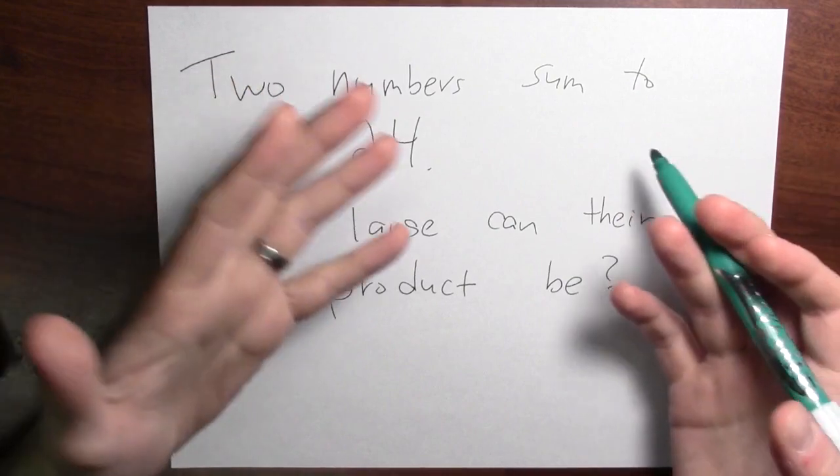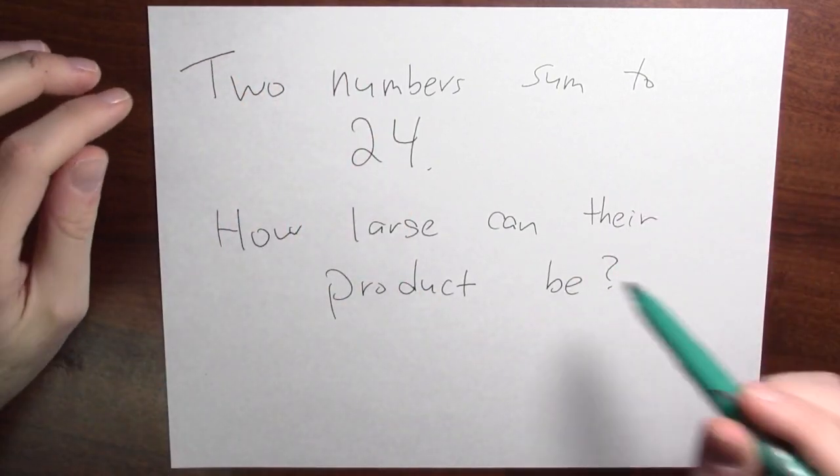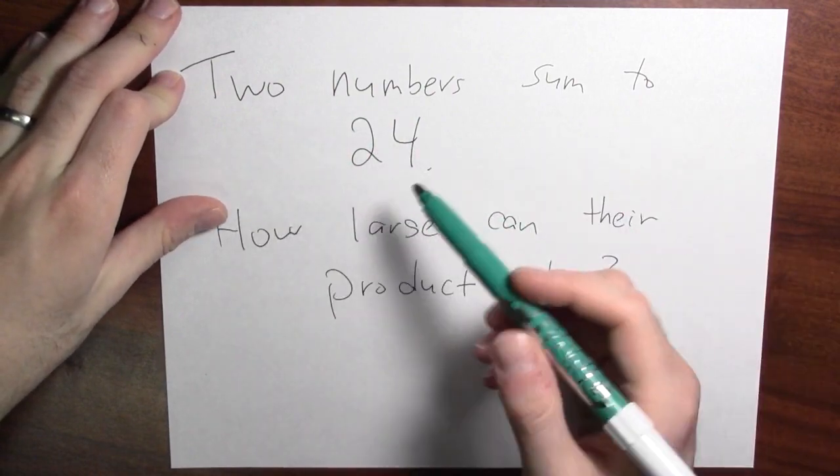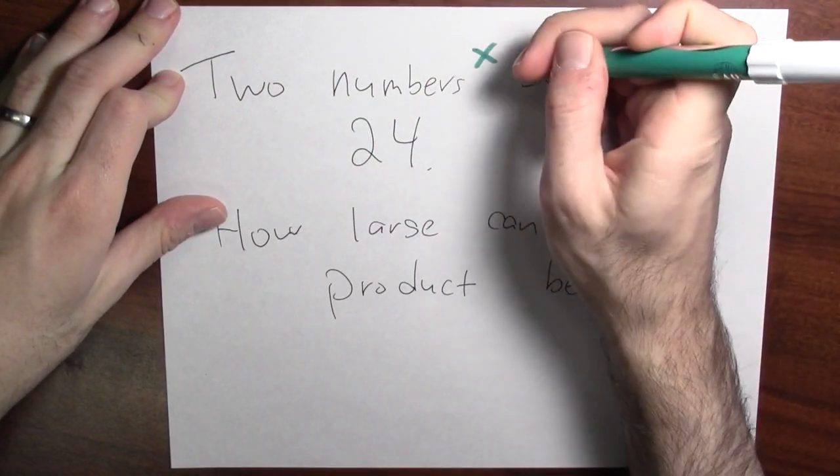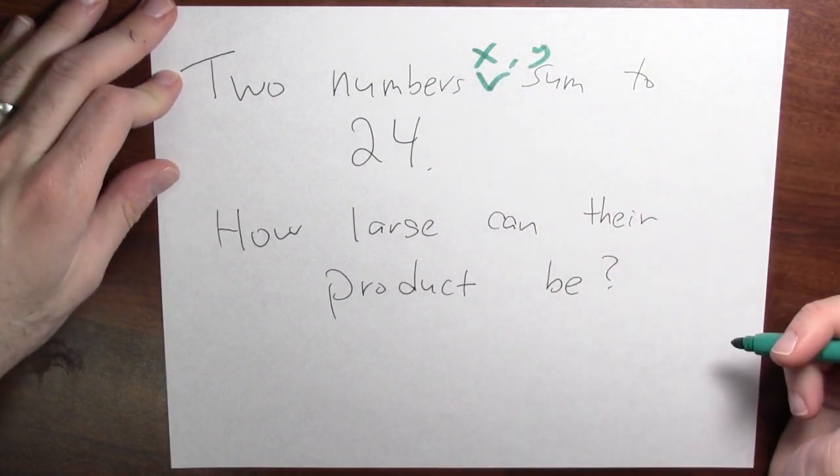This is an optimization problem. So let's draw a picture. Maybe I can't draw a picture in this problem, but at least I can label things. So instead of just saying two numbers that sum to 24, let's give them a name. Two numbers x and y, which sum to 24.